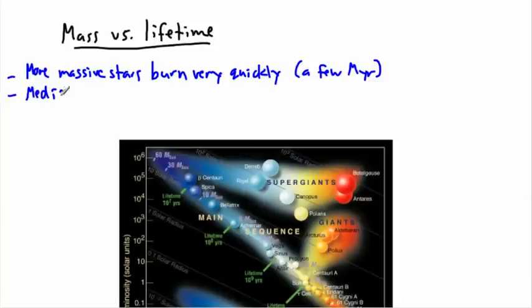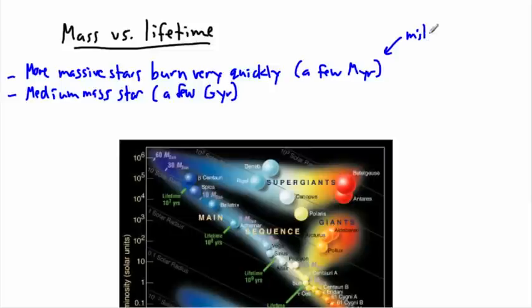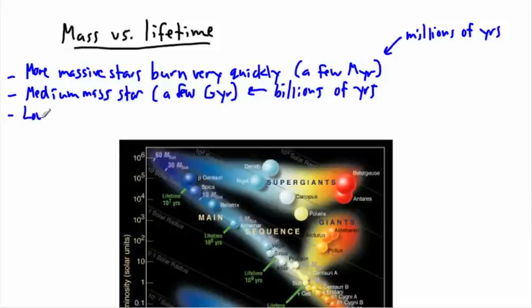Whereas something that's a medium mass star will have a lifetime of around, it could be something like a few billion years - in other words, gigayears. These live some millions of years only, which is very very short. These of course are billions of years.